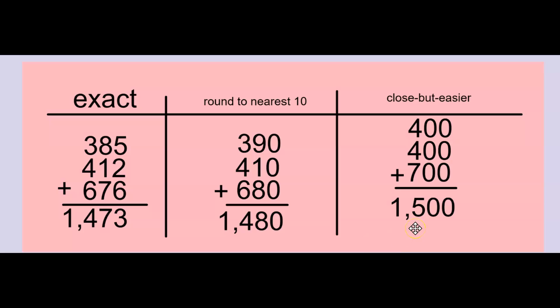Both of these estimates are good estimates. Both of these strategies are useful strategies. One strategy is faster. Sometimes close but easier numbers will get us a faster, easier estimate.